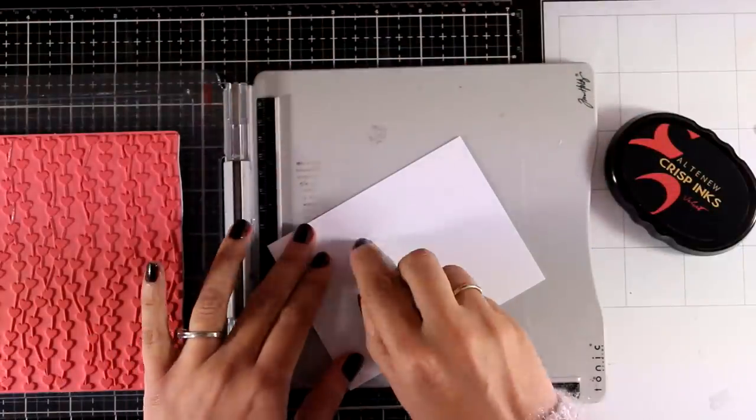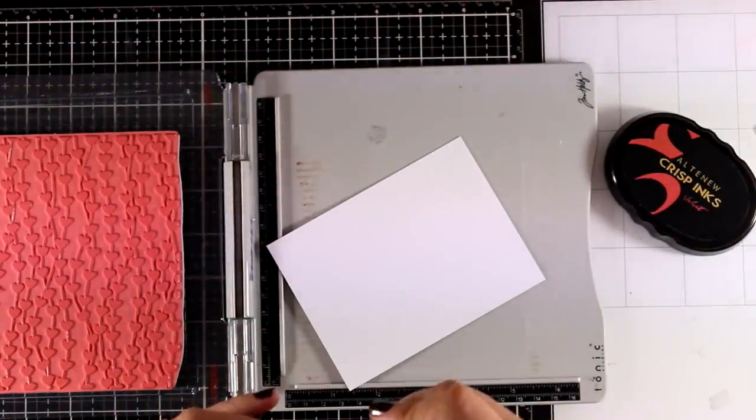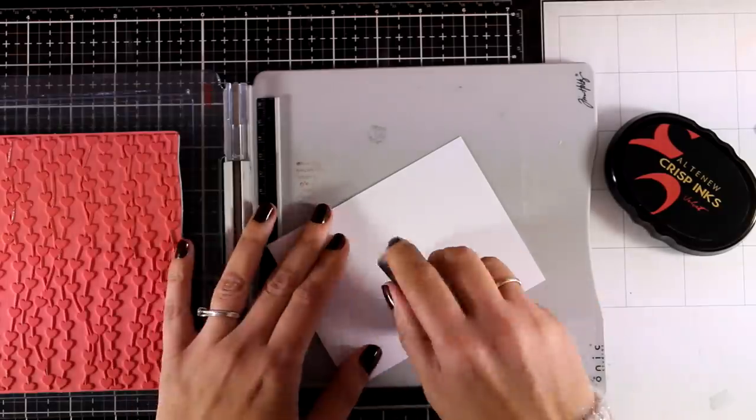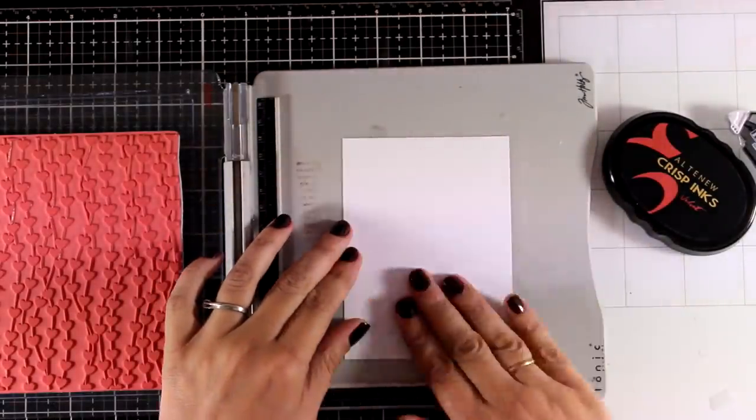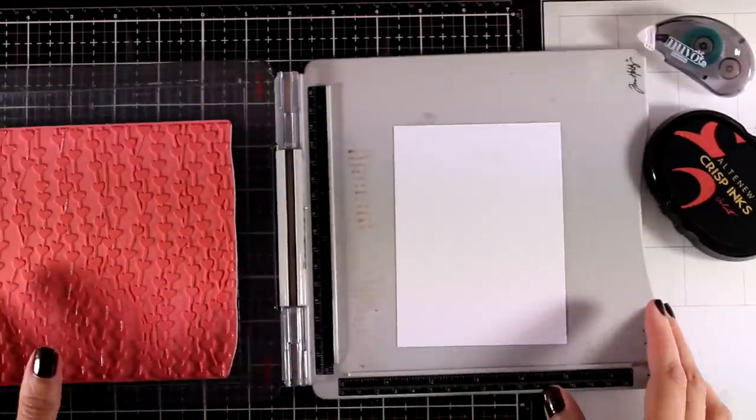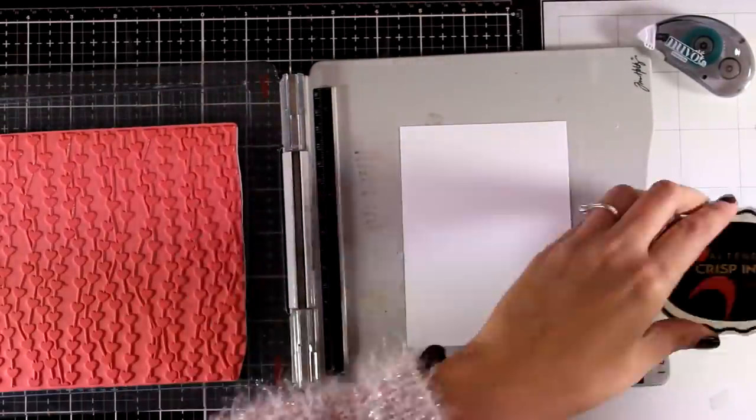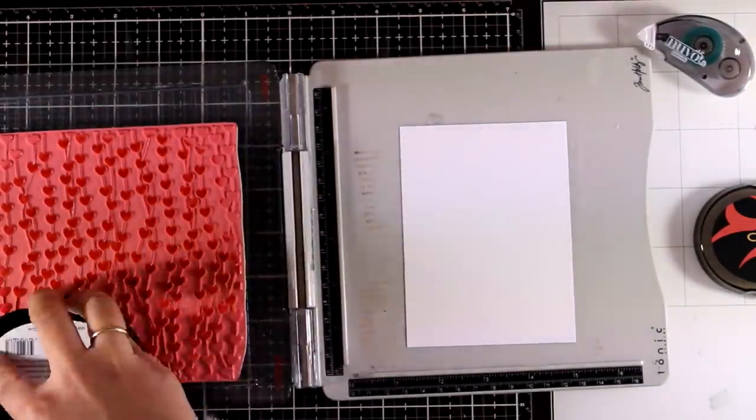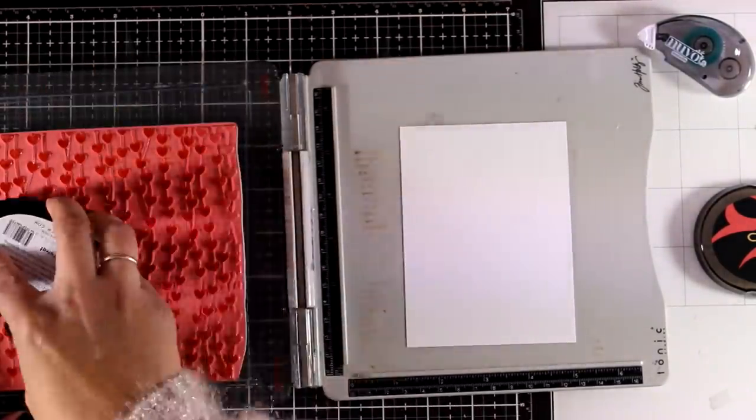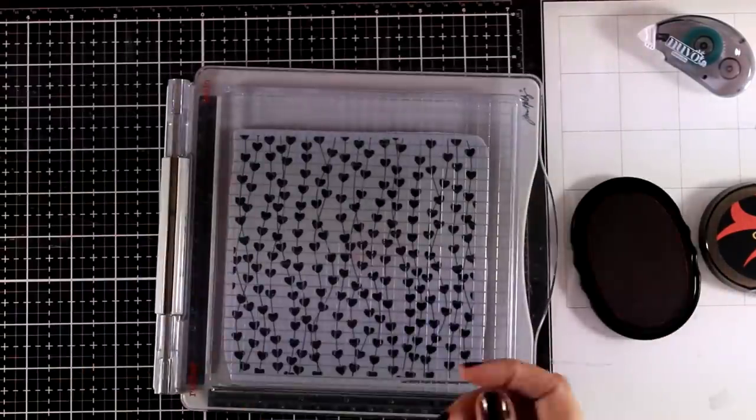For the second card I'm going to do some stamping and if you are wondering how my paper stays in place I'm just using some tape in a few areas to secure it down. This way I avoid using the magnets when I want to cover up completely my panel. Now I'm going to stamp with dark red ink and the one I'm using is called Velvet by Altenew.